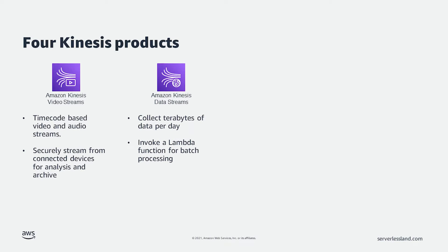The second service is Kinesis Data Streams. Kinesis Data Streams is able to ingest and collect terabytes of data per day from application and service logs, clickstream data, sensor data, and in-app user events to power live dashboards, generate metrics, and deliver data into data lakes. To process the data, Data Streams can invoke a Lambda function with a batch of records. The Lambda function then processes each of the records with your custom logic.